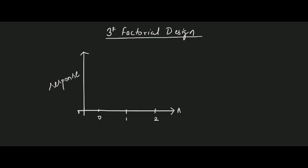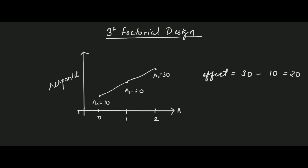Assume that when factor A is at low level, the response is 10, and we denote this by a0 = 10. When the factor is at intermediate level, the response is 20, denoted by a1 = 20. If the response varies linearly with the change in the level of the factor, then if we change the level of A from 1 to 2, the response will again vary linearly and the change in the response will again be 10, and the response at high level of A will be 30. As the response varies linearly, the effect of factor A is simply the response at higher level of A minus the response at low level of A, which is equal to 20. This effect is called the linear effect.